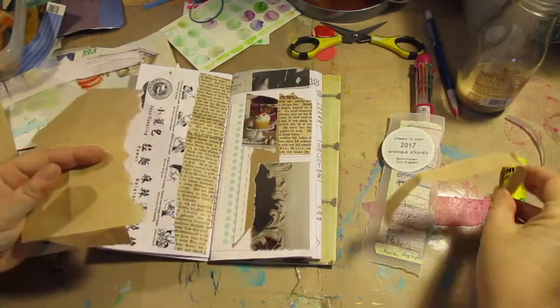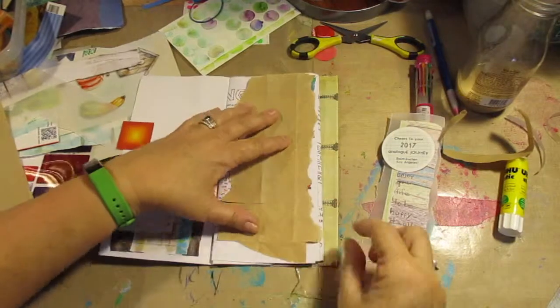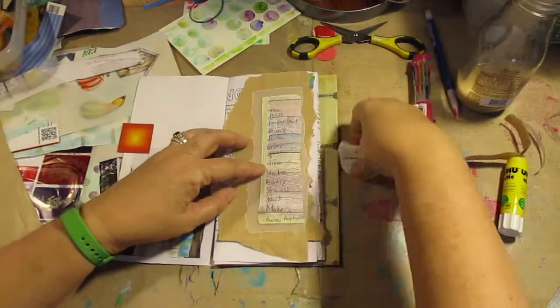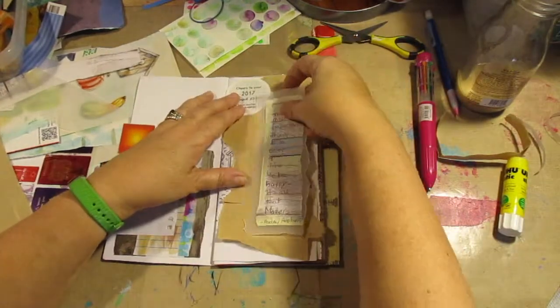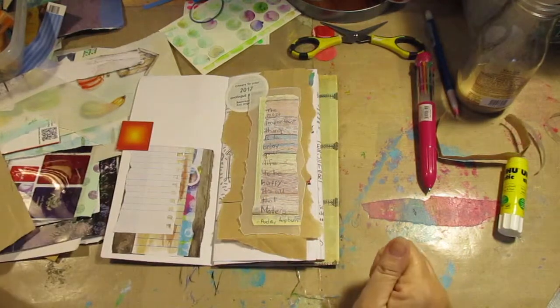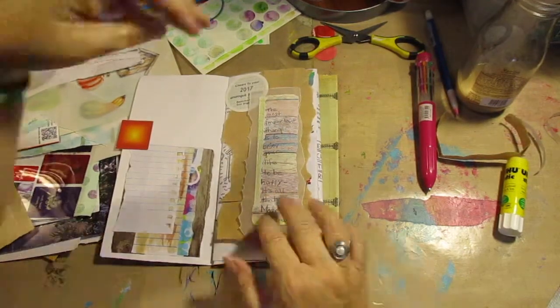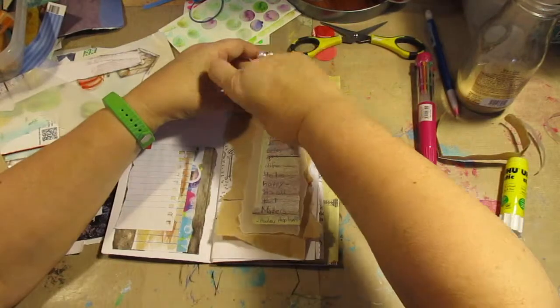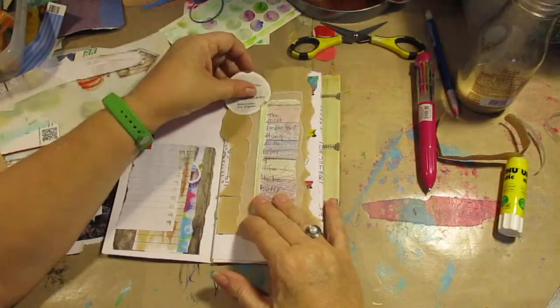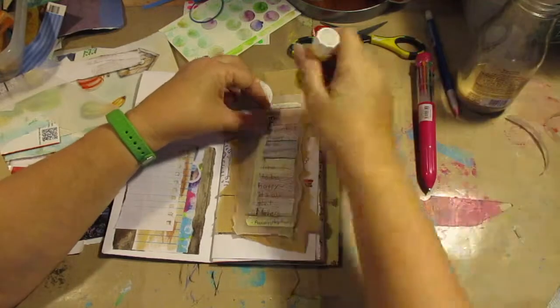And of course I tear everything because I love a torn edge. And I put it down on top of this, I think it was a child's puzzle book page. And I like how that looks. I think the sticker says cheers to your analog journey. And then it says Bom Kitchen Los Angeles.